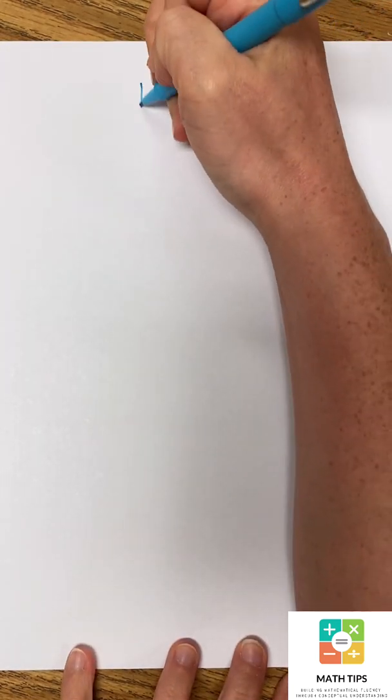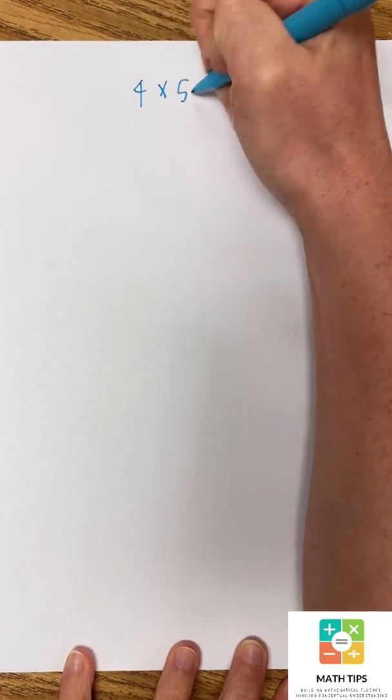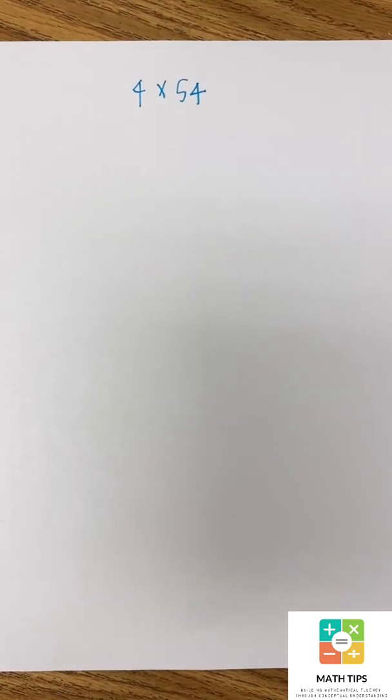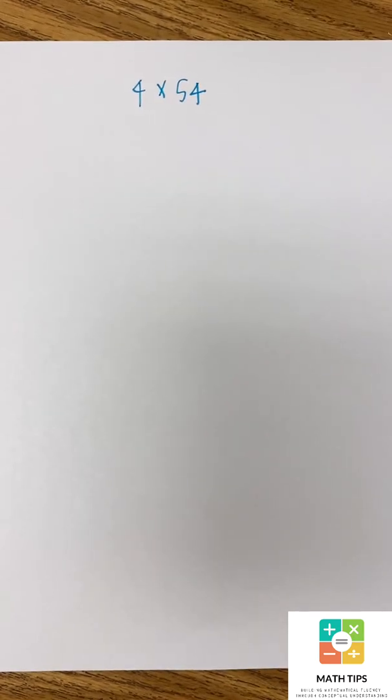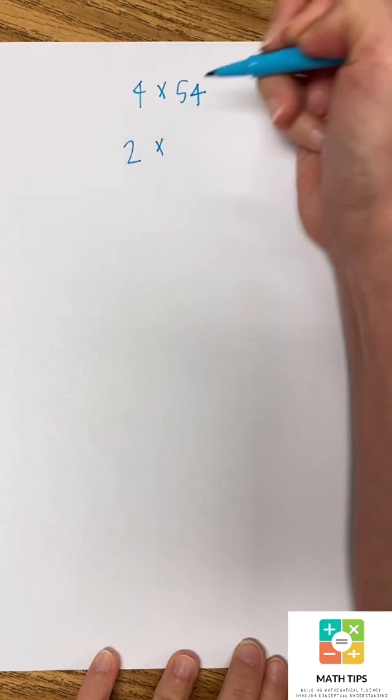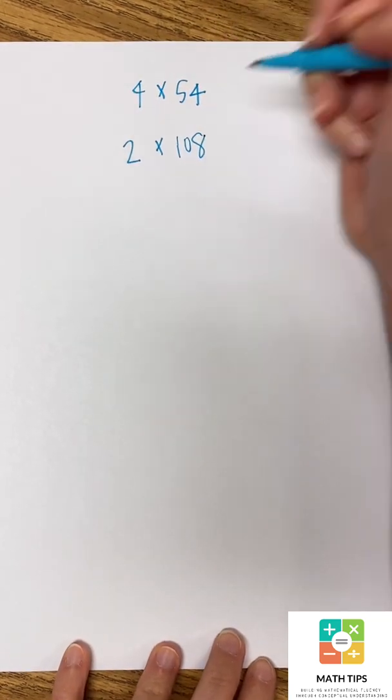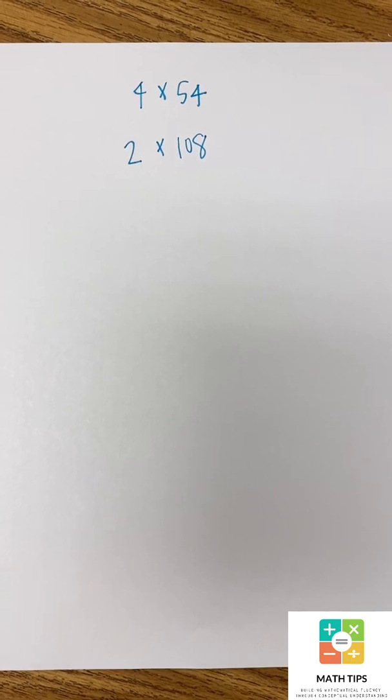For example, let's say a student had the problem 4 times 54. They would half one of the factors and then double the other factors. So for example, they might half 4 to 2 and then double 54 to 108 and that makes this problem easier to solve.